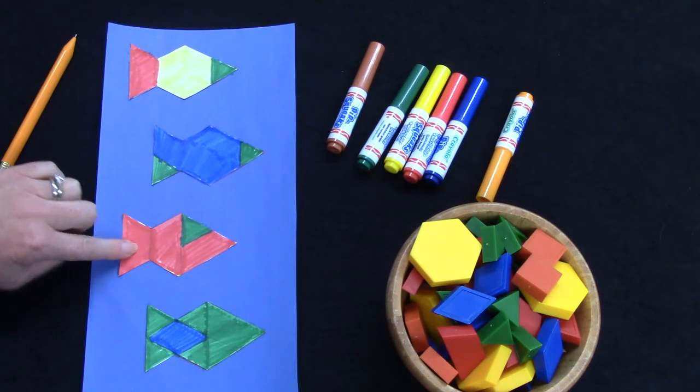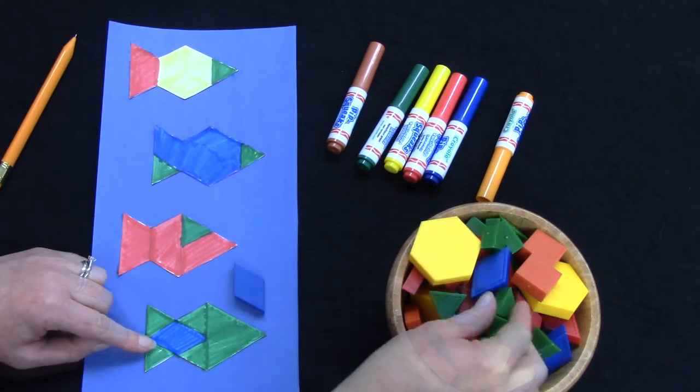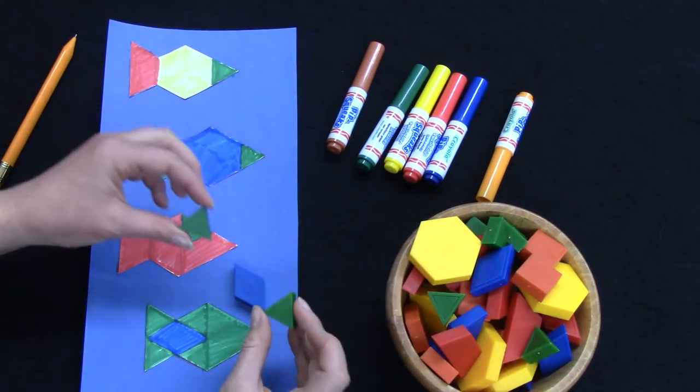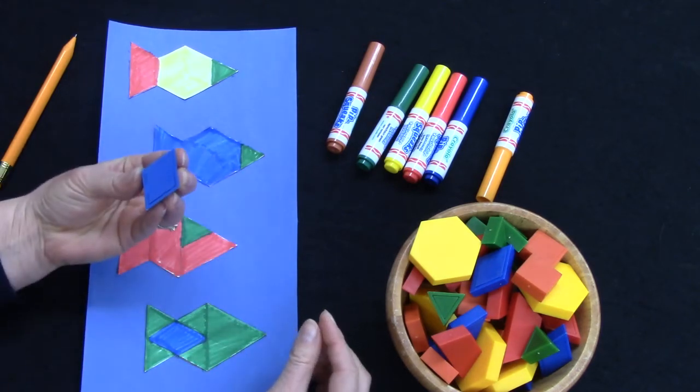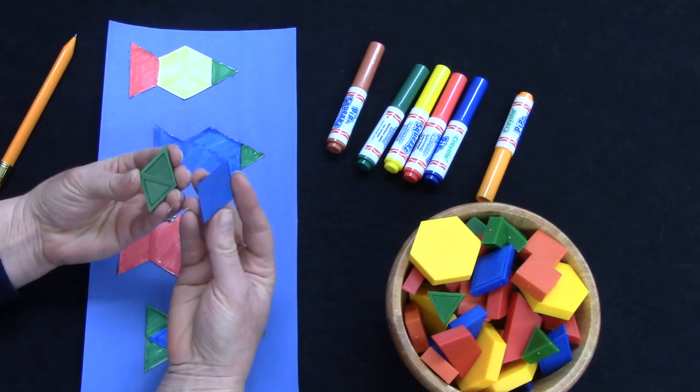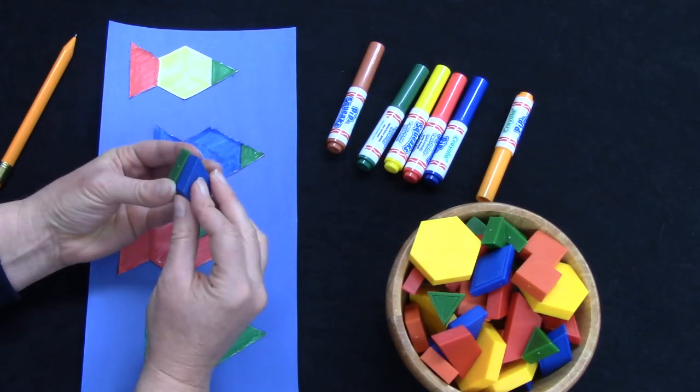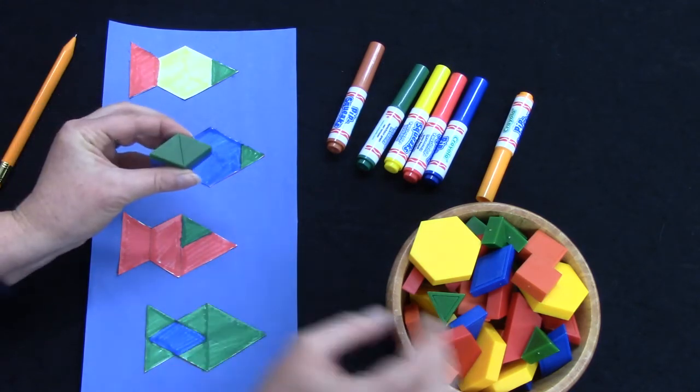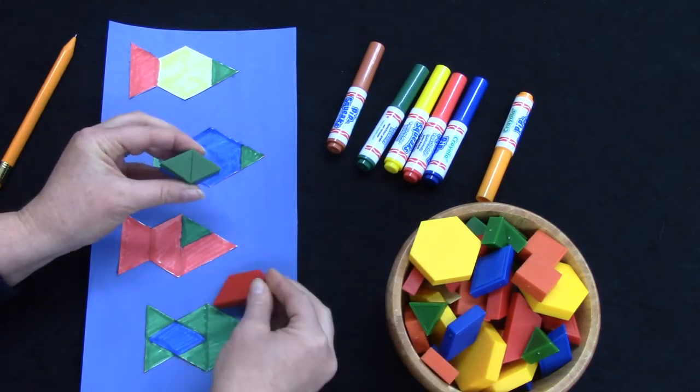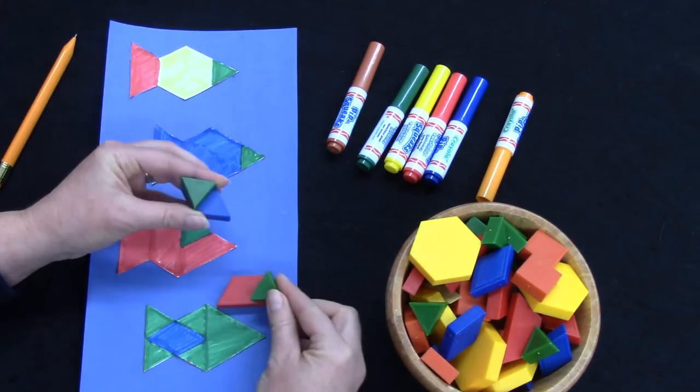Friends, today we learned that we can cover a design in many different ways. We also learned that our shapes, when we put them together, can cover another shape. Two triangles equal the same size and shape as a rhombus, and a trapezoid is the same as a rhombus and a triangle, or even three triangles.